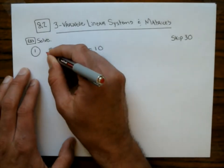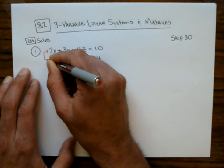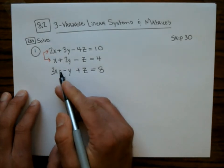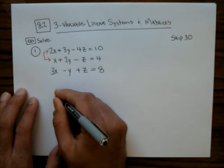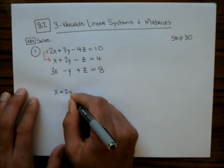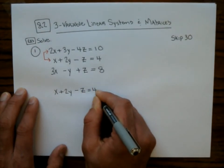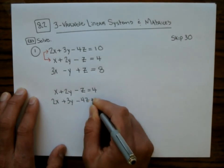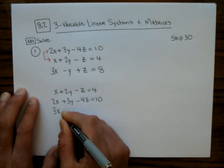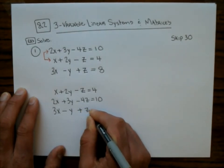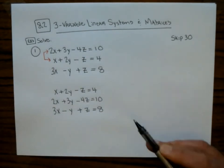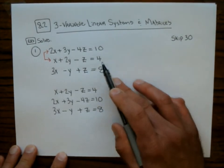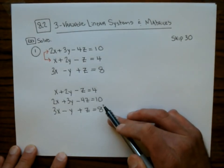One thing that's not going to change your solution is if I were to take the first equation and switch the order with the second equation. So I can interchange two equations. Rule number one: we can interchange two equations and get the same solution for that system. That's not going to affect things.